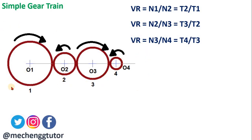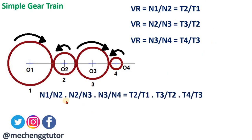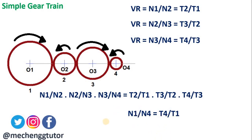To obtain the total velocity ratio, we multiply all three ratios: (N1/N2) × (N2/N3) × (N3/N4) = (T2/T1) × (T3/T2) × (T4/T3). Cancelling common terms — N2, N3 on the left and T2, T3 on the right — we get N1/N4 = T4/T1. This shows the velocity ratio of a simple gear train is independent of the intermediate gears; it depends only on the first and last gear.